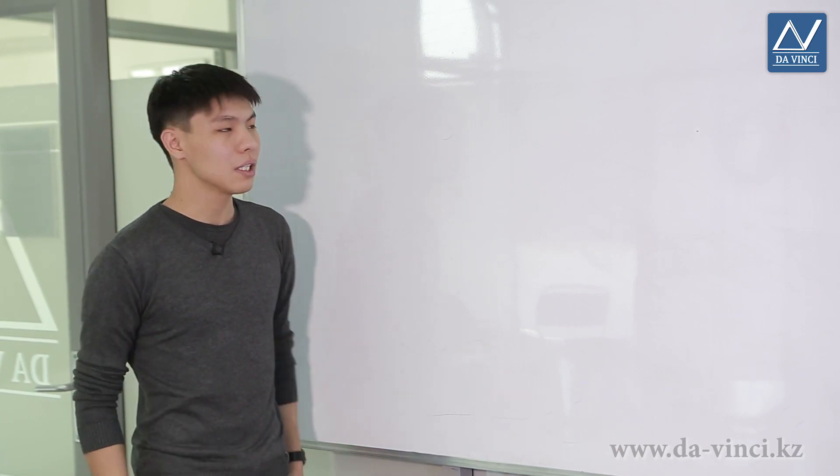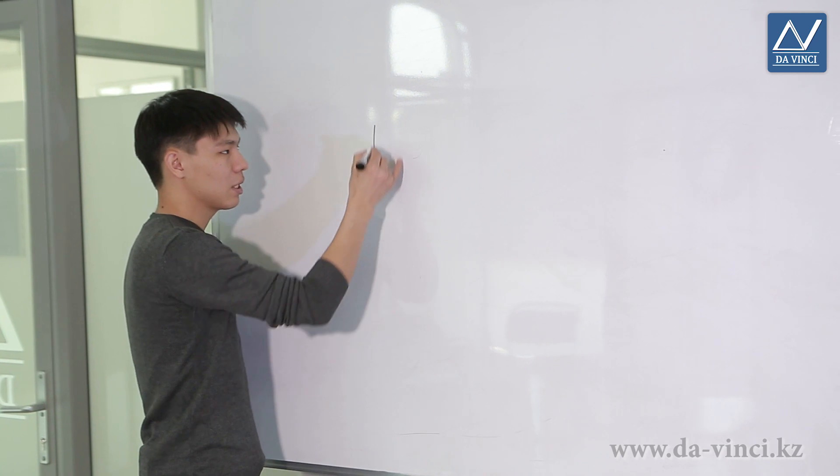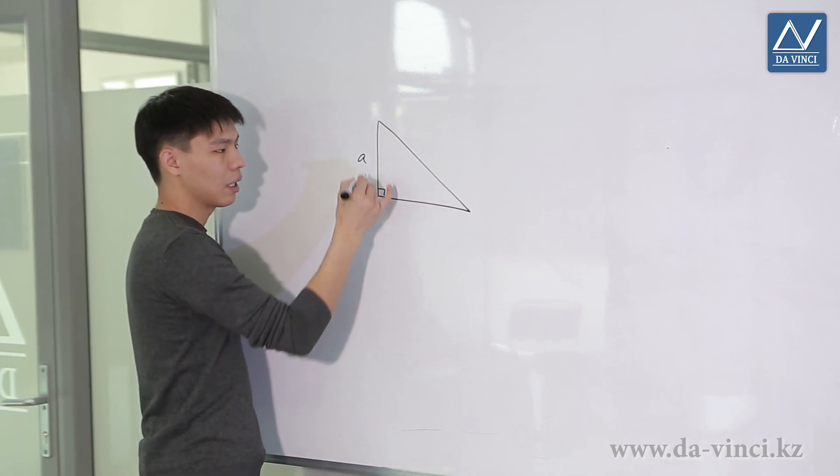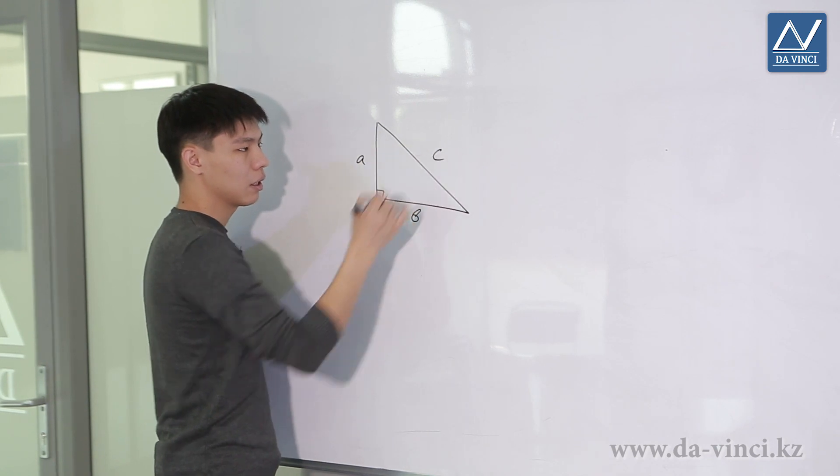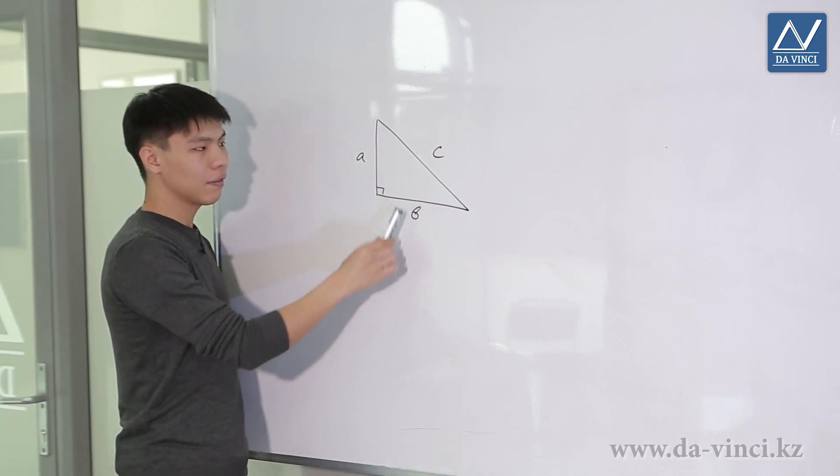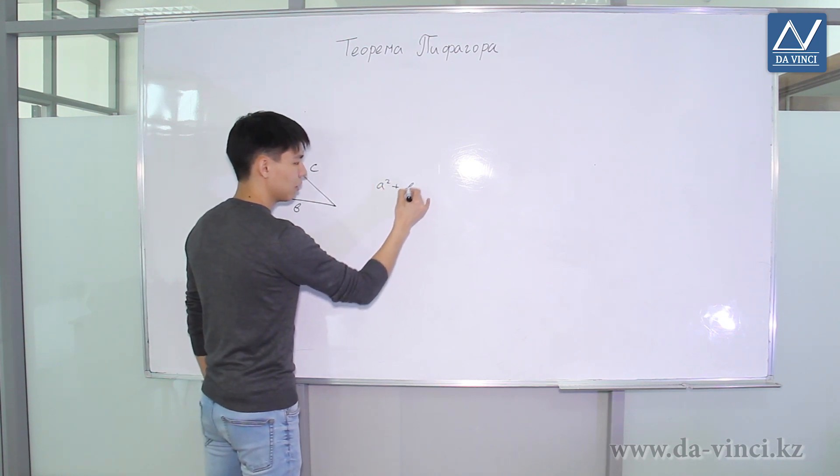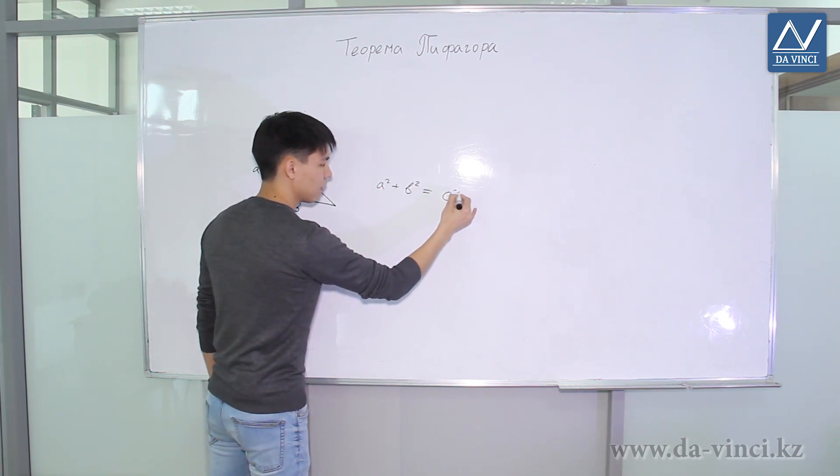The Pythagorean theorem reads as follows. If we have a right triangle with legs A, B and hypotenuse C, then the sum of the squares of the legs is equal to the square of the hypotenuse. That is, A squared plus B squared equals C squared.